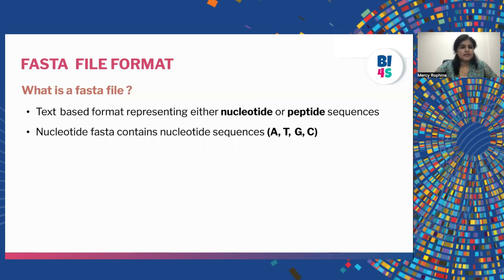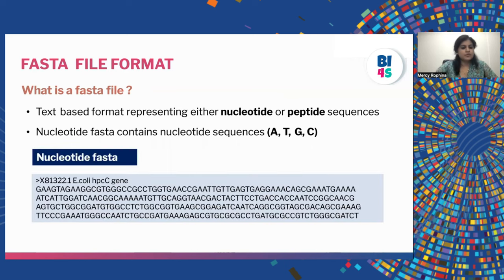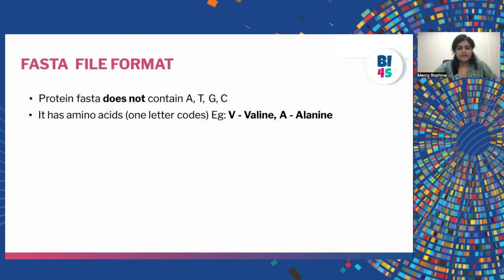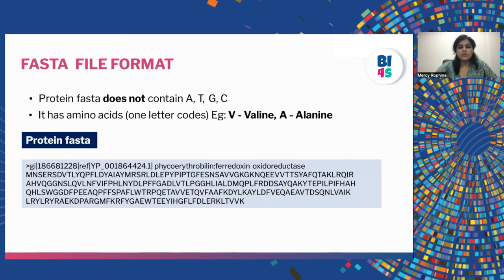A FASTA file is a text-based format which can represent a nucleotide sequence or a protein sequence. If it is a nucleotide FASTA, it will consist of nucleotides such as A, T, G, and C — we can see a continuous arrangement of these in a nucleotide FASTA example. Whereas when we look at a protein FASTA, it does not contain A, T, G, and C; instead it contains one-letter codes of amino acids — for example, V stands for valine, A stands for alanine. So in a protein FASTA, we see multiple other alphabets beyond A, T, G, and C.